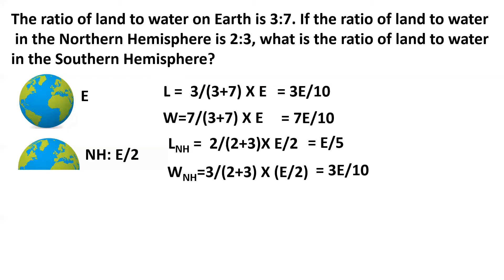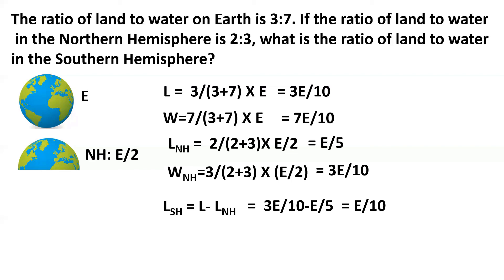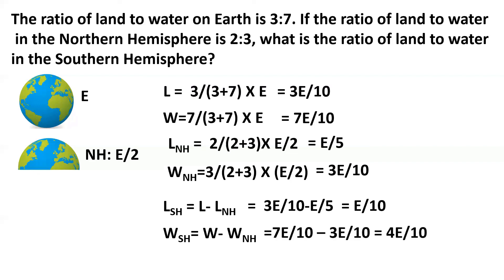We know the total amount of land on earth in terms of E, and we also know the amount of land in the northern hemisphere in terms of E. If we take the difference of these two, we get the land on the southern hemisphere in terms of E, and that comes to E by 10. Similarly, if we take the difference of the total water on earth and water in the northern hemisphere, we get the amount of water in the southern hemisphere, which comes to 4E by 10.